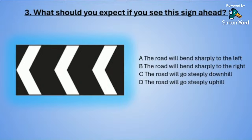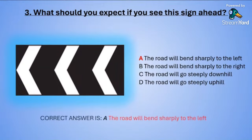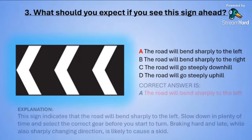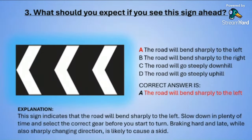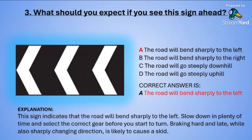The correct answer is A — the road will bend sharply to the left. This sign shows that the road will bend sharply to the left. You need to slow down in plenty of time and choose the correct gear before you start to turn. Braking hard and late while also sharply changing direction is likely to cause a skid.